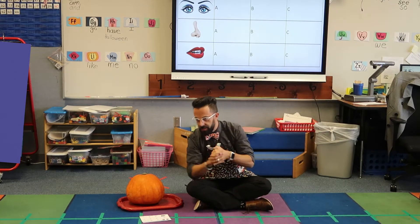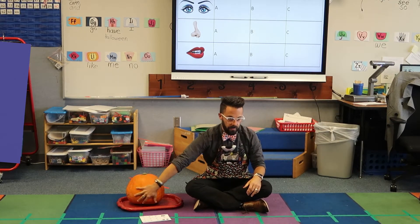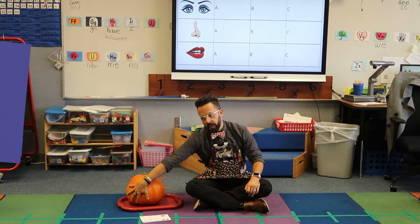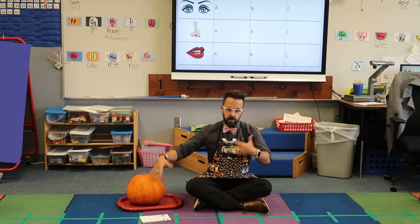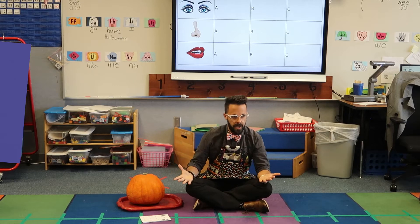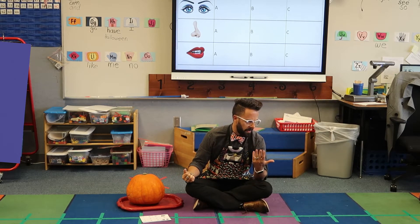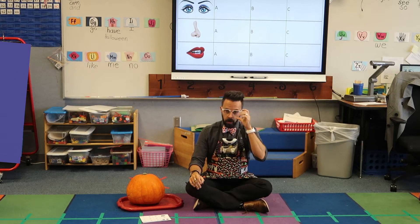So since it's Halloween, I thought it'd be nice if we got to carve this pumpkin like a jangler. Since we're a class and we all work together, I thought it'd be nice if you guys got to decide what we did for the pumpkin instead of me doing it. Would that be nice? Awesome. So we're going to vote on what we're going to do for the eyes and the nose and the mouth.